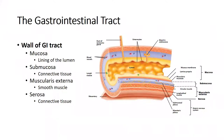To recap: the wall of the GI tract has the mucosa — the inner lining closest to the lumen; the submucosa — the connective tissue lining outside of that; the muscularis externa — a thick layer of smooth muscle; and the connective tissue layer, which is the serosa.